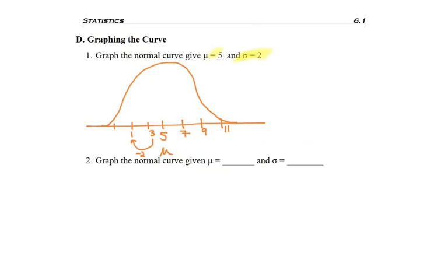So when I go one standard deviation below, I subtracted 2 to get a 3. I subtract 2 again to get a positive 1. And keep in mind, I'm going to subtract 2 again, and I end up getting a negative 1. That's okay.